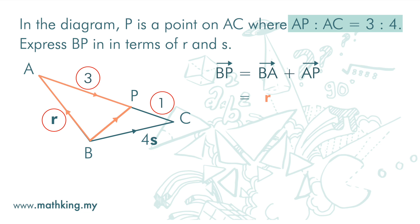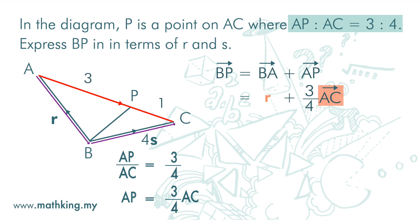Or, we can use ratio. Now, AC is AB plus BC, and it is negative R plus 4S. And BP is 1 over 4 R plus 3S.